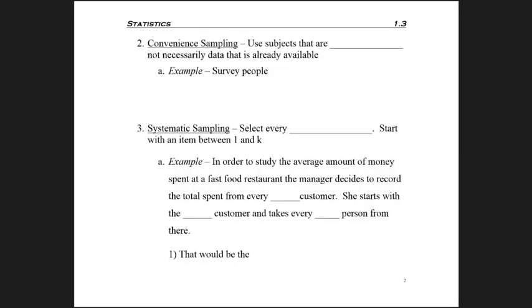A second sampling method is called Convenience Sampling, and this is where you use subjects that are easy to obtain. So it's not necessarily data that's already out there, that's what people always confuse it with, but it's just somehow easy for you to get the data from your group of people, your population, whatever it may be. For example, let's say that you're going to survey people as they walk out of a coffee shop.